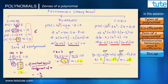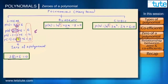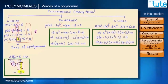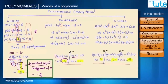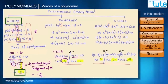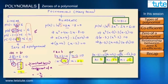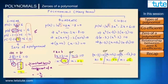Let's recap what we've studied: we know what a zero of a polynomial is and how to find it by equating the polynomial to zero and factorizing. We saw the relationship between zeros and coefficients of a linear polynomial, which is minus b upon a. Finally, a linear polynomial can have only one zero, a quadratic can have a maximum of two zeros, and a cubic can have a maximum of three zeros.